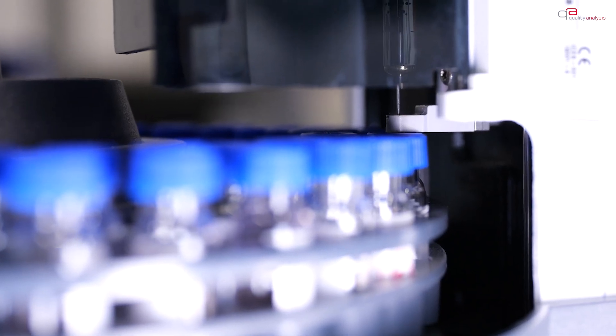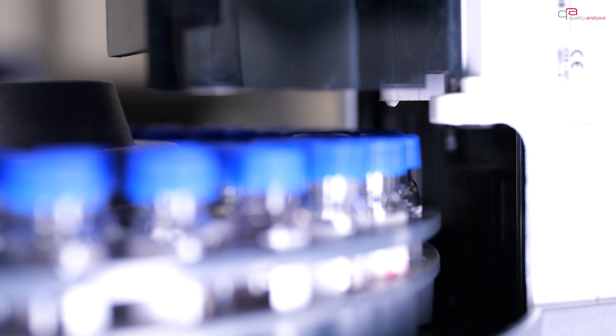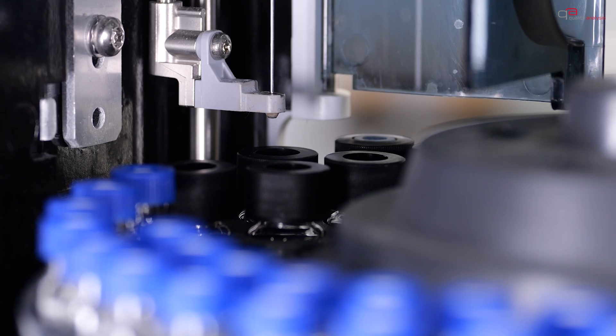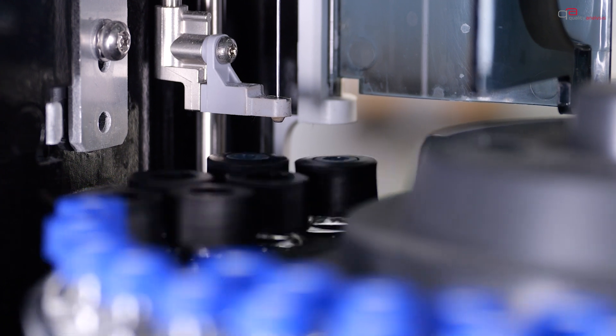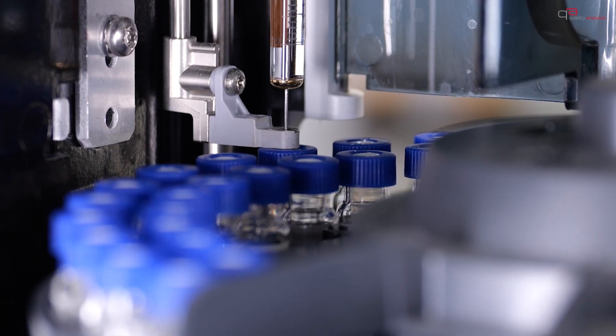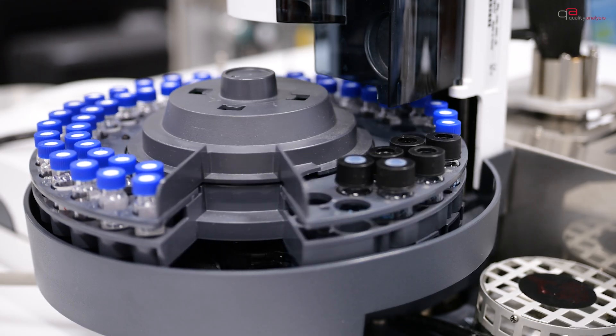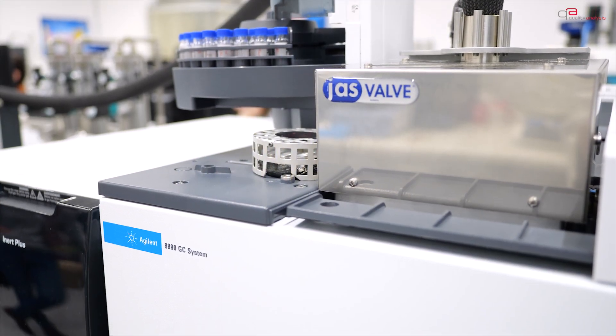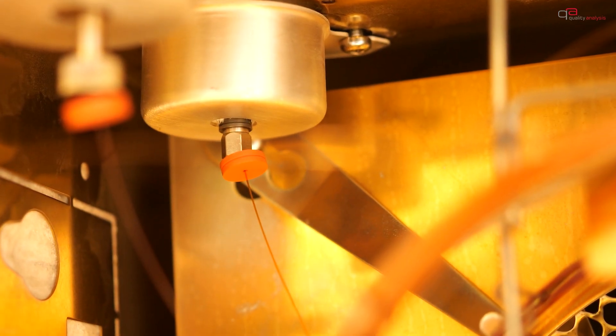The injector system we use is a split splitless injector. Here, the sample is automatically injected with a syringe in a standardized manner using an auto sampler and vaporized. The carrier gas, or mobile phase, usually helium or hydrogen, transports the sample to the separation column.